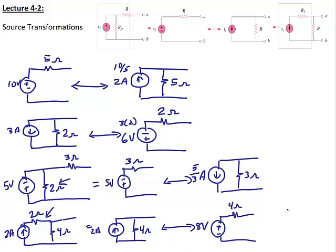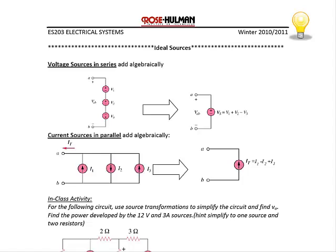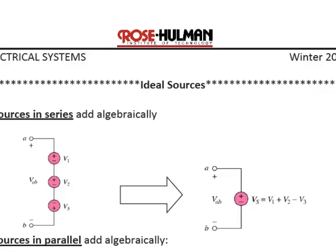Recall that source transformations are valid for independent and dependent sources, and we will see some examples of that. Since we're discussing circuit simplification techniques, there's one more we should talk about because we will need this when we start using source transformations to analyze circuits. One is based upon voltage sources in series.